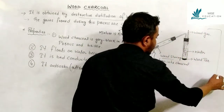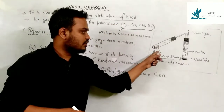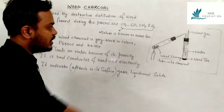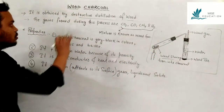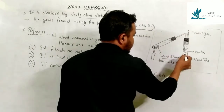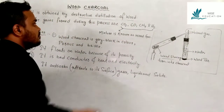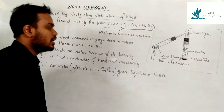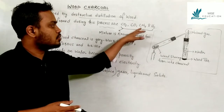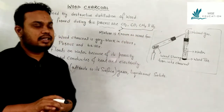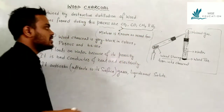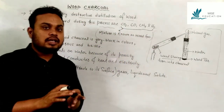This is an overall diagram of the destructive distillation of wood. The gas formed in this process is volatile and escapes. The gases formed are carbon dioxide, carbon monoxide, methane (CH4), and hydrogen.